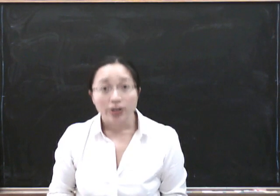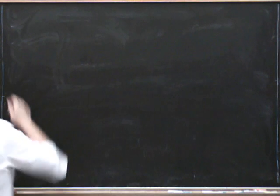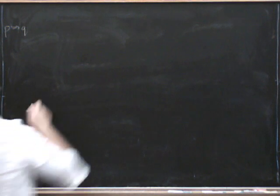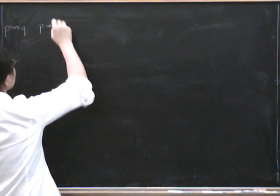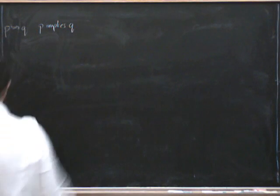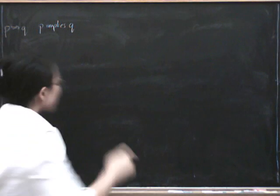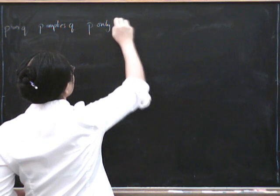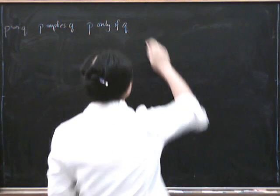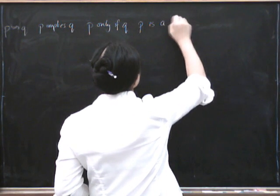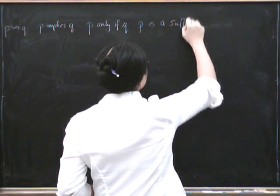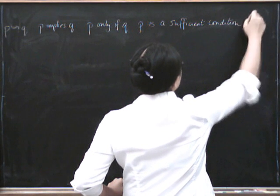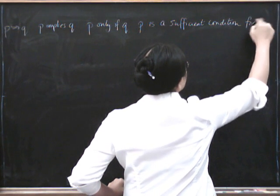Okay, let's look very carefully at some logical statements. Here's P implies Q, so that's written P implies Q. That's exactly the same as saying P only if Q, and that's the same as saying P is a sufficient condition for Q to be true.